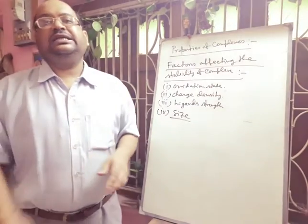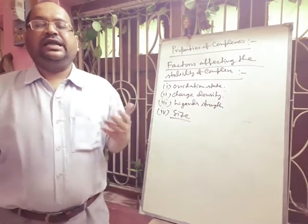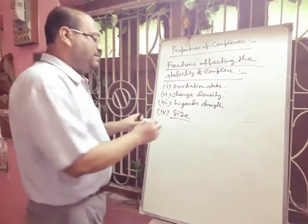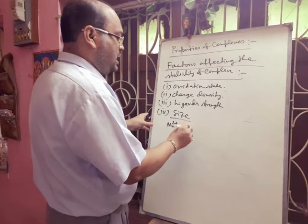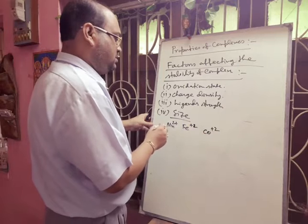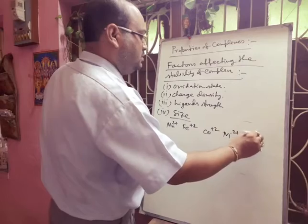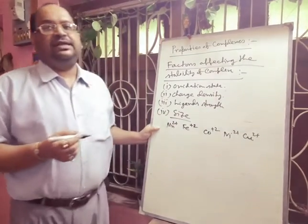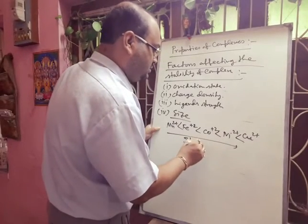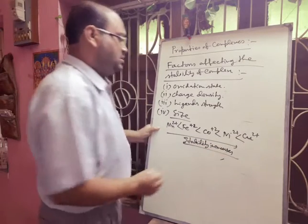Another factor is the size of the metal ion. As the size of the metal ion decreases, the stability of the complex increases. There is a well-known Irving-Williams order: Mn²⁺ < Fe²⁺ < Co²⁺ < Ni²⁺ < Cu²⁺. As we go from manganese to copper, the ionic size decreases and the stability increases in this order.